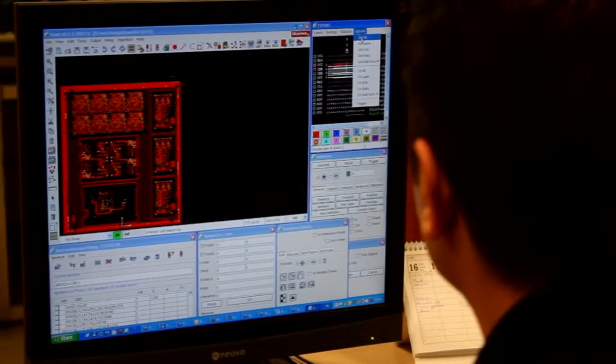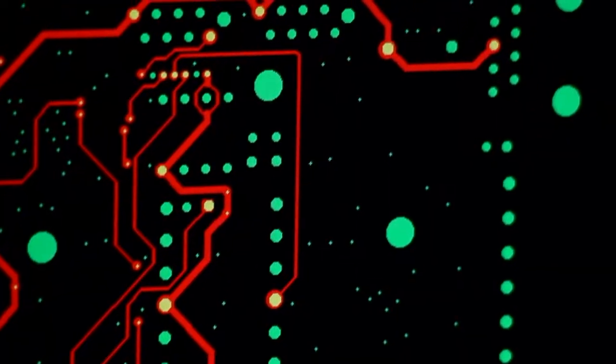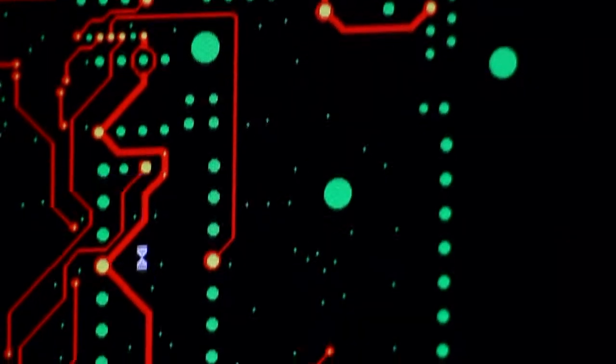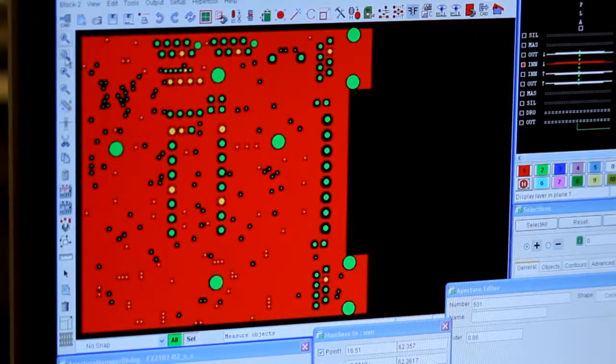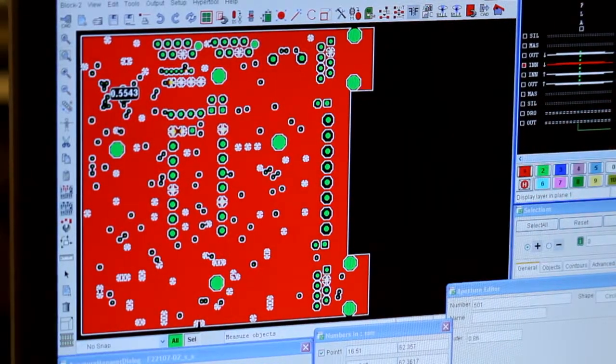First we check that data meets our manufacturing requirements. These checks are mostly done automatically. We check the track widths, the space between the tracks, the pads around the holes, the smallest hole size, etc.